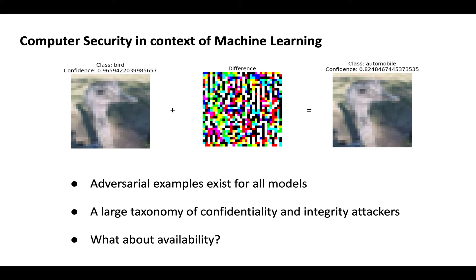Adversarial examples are data points that have been edited in a special way that manipulate model behavior. Consider the bird example on the slide. A typical model treats the image on the left as a bird, whereas by adding the noise shown in the middle, the image suddenly turns into a car in the eyes of the model. Adversarial examples exist against practically all models and there is a very large taxonomy of different attackers, commonly targeting integrity and confidentiality. But little is known about availability. Our paper is the first to demonstrate that availability of machine learning can be attacked and such attacks work in practice against modern ML as a service.